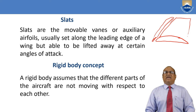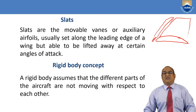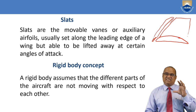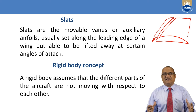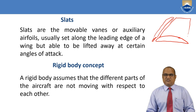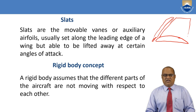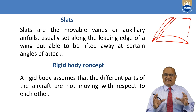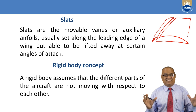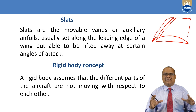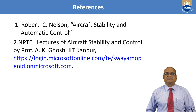Rigid body concept: we assume that the aircraft body is not flexible — it is very rigid and the mass remains in the same place under any condition. A rigid body assumes that different parts of the aircraft are not moving with respect to each other; every part is intact where it is supposed to be, and there is no change in shape or status of the aircraft under any condition.